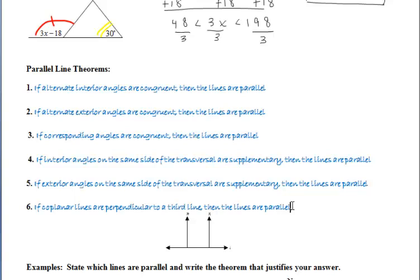For the parallel line theorems, I'm going to give you a few moments to fill these in. If you have to press pause to copy down all six theorems, please do so. This goes back to section 4.5 when we're talking about the different angles associated with parallel lines. If certain angles are congruent, then the lines are parallel, and if certain angles are supplementary, then we have parallel lines as well.